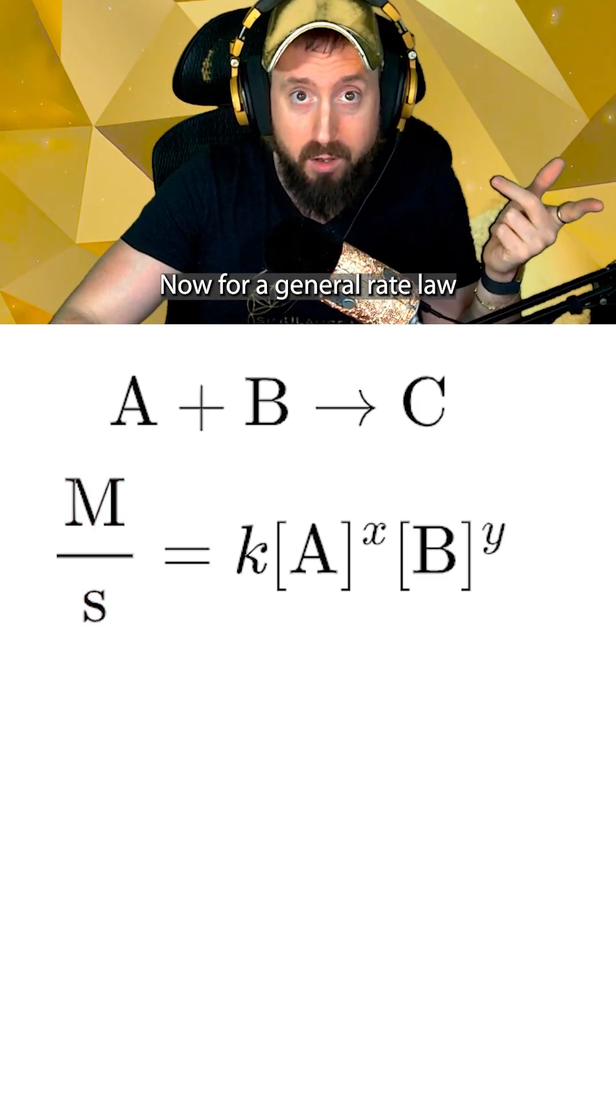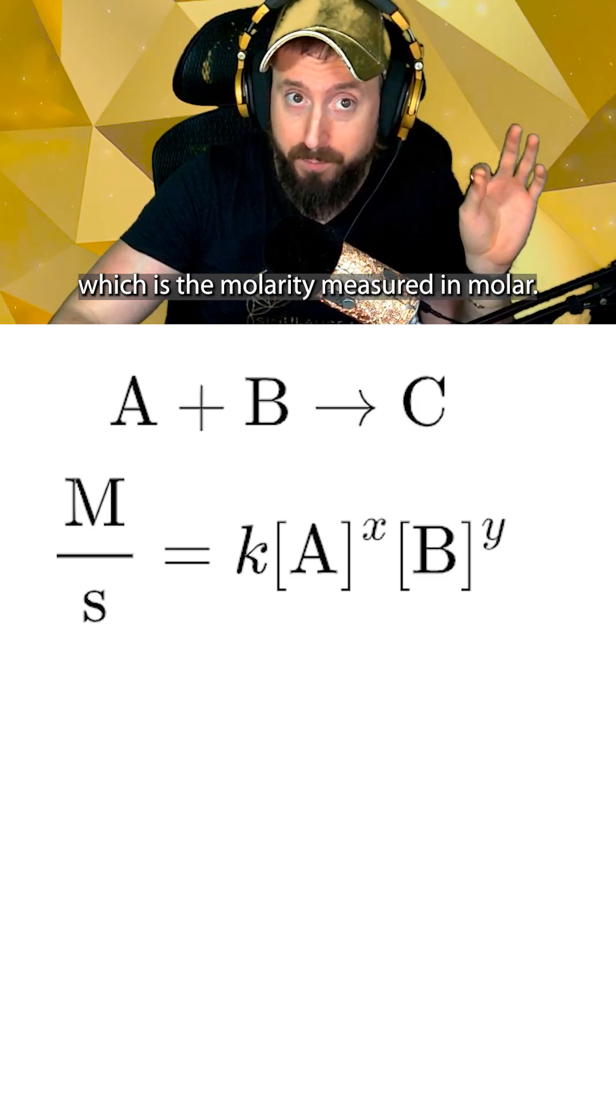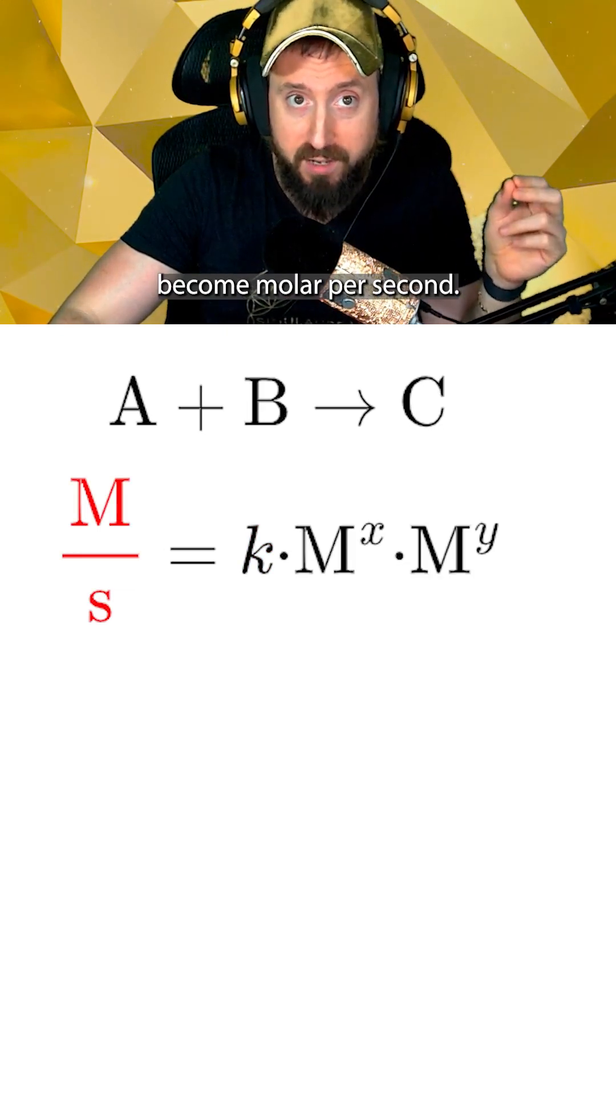Now for a general rate law, all of these reactant terms are concentrations, which is molarity measured in molar. So we need to figure out the units of K such that the total units become molar per second.